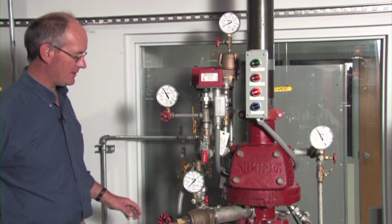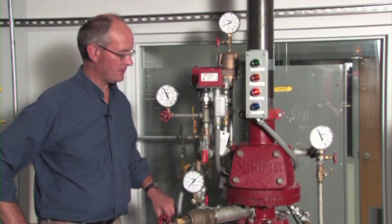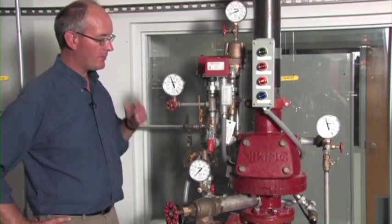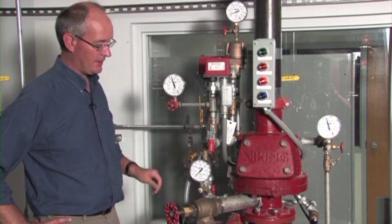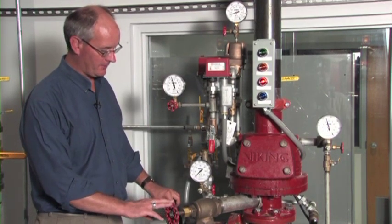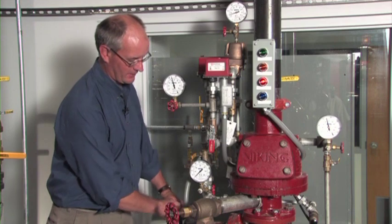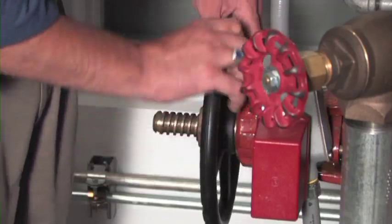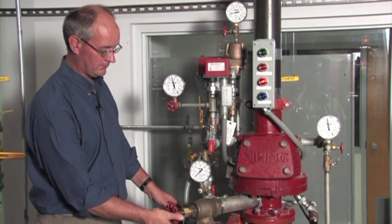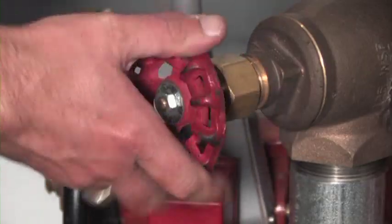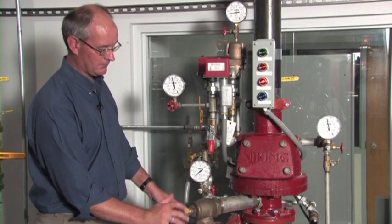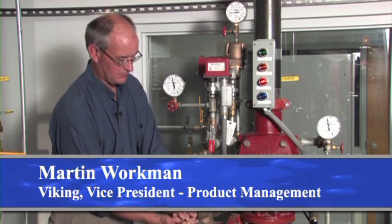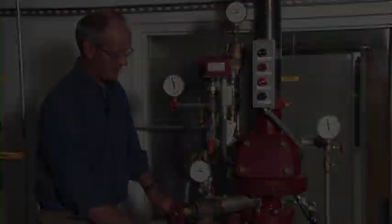Once the air pressure is established in the system, your supervisory alarm for your low air pressure should clear. Now we can bring our water supply to the base of the riser. We're going to leave our main drain open. We're going to crack open our water supply so we get a water flow through the main drain. Then we're going to slowly close the main drain. And now we can open our control valve entirely.